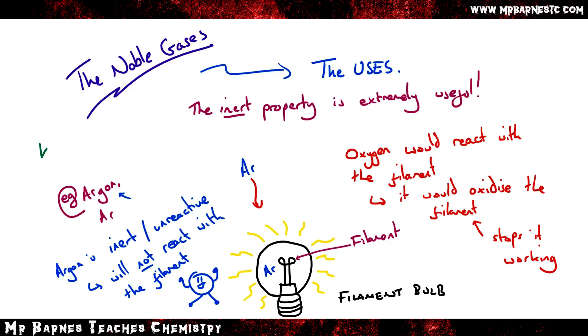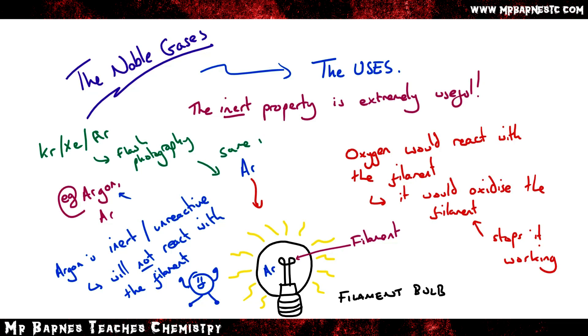Some of the other noble gases have exactly the same property. So for example, krypton, xenon, and argon are also used in flash photography, and the explanation is exactly the same — it stops anything from reacting with the filament.